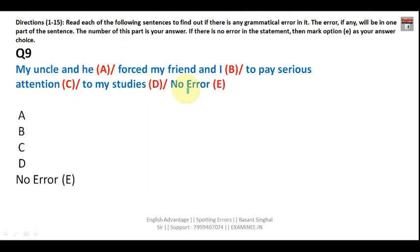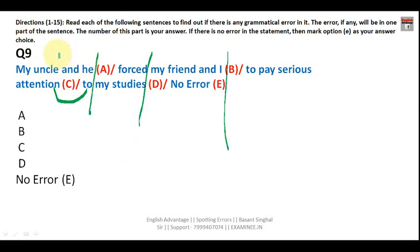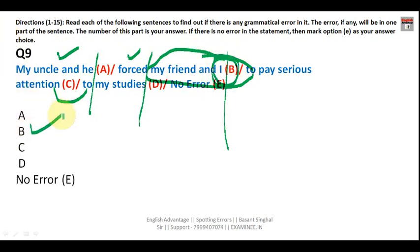Question nine: 'My uncle and he force my friend and I to pay serious attention to my studies.' 'Pay attention to' is correctly followed by the object. 'My uncle and he' is the subject — pronouns in the subjective case are correct there. However, in the object position, you must use the objective case. So 'my friend and I' should be 'my friend and me.' Your answer is B.